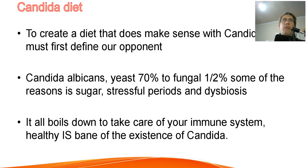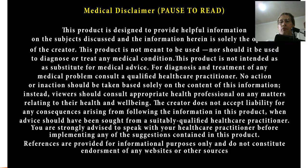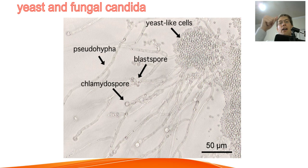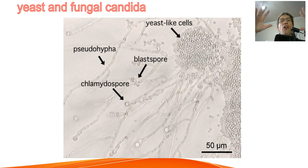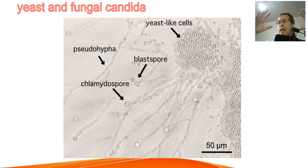The second reason is a stressful period. Two things in your body keep candida in the yeast form: number one, your immune system, and number two, your own friendly bacteria. If your immune system is not working properly, or if there is dysbiosis — an imbalance between good bacteria and bad bacteria — then candida is way more prone to go from the yeast form to the fungal form.